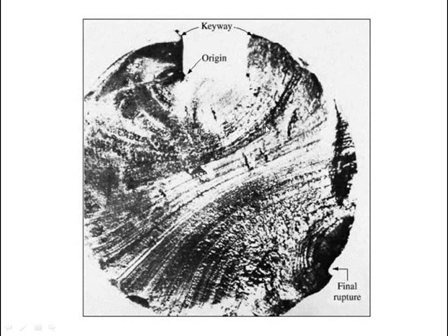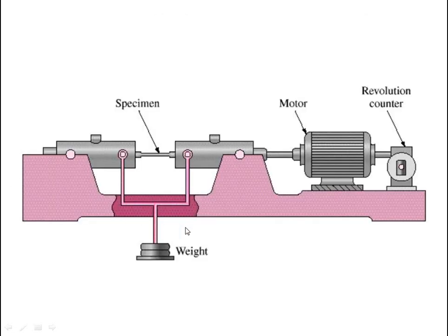There is a micrograph of a fatigue failure. This is the specimen and apparatus for fatigue testing. There is a revolution counter and a motor, and from this motor the force is applied through to the specimen. A continuous, cyclic force is applied, and after some time the specimen fails at this position.